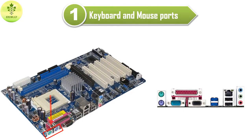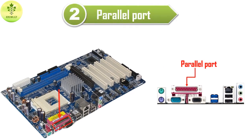These are the mouse and keyboard connectors. A purple 6-pin connector is used for the keyboard and a green pin is used for the mouse. And this is the parallel port. A parallel port is available for a printer to connect to the computer. In the parallel port, a 25-pin female DB type connector is used.